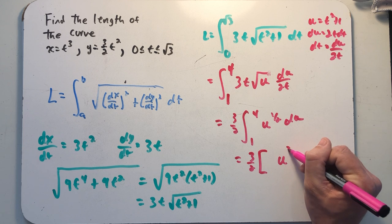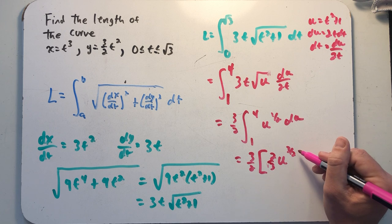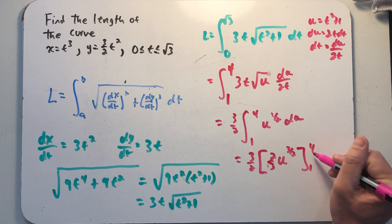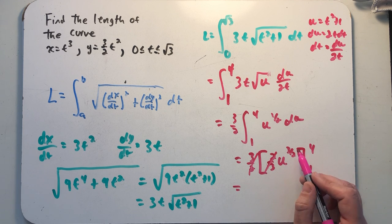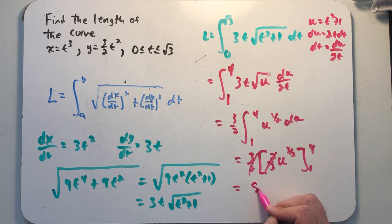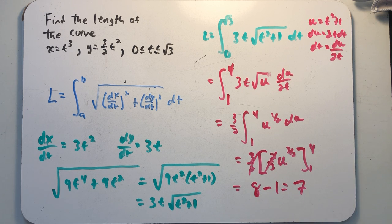All right, so that's going to be u to the 3 halves times the 2 thirds. Well, the 3 halves and the 2 thirds will cancel. I'm going to end up with 4 to the 3 halves, so that is 8. And then 1 to the 3 halves is 1. And I get the arc length of this curve must have been 7.